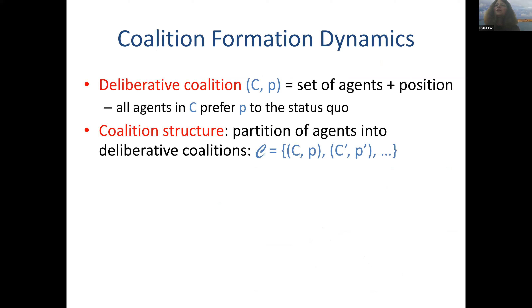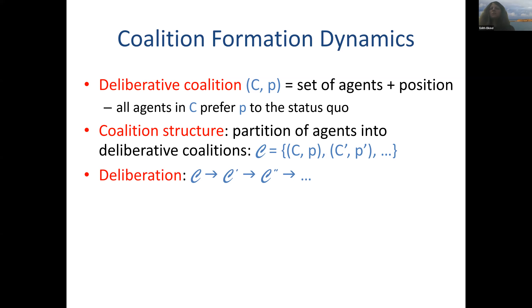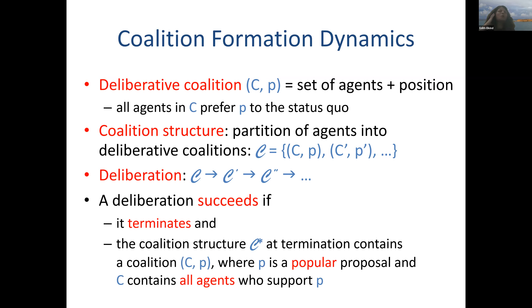A deliberative coalition has two components: a coalition and a proposal. We require that all agents in the coalition approve this proposal, meaning they prefer it to the status quo. The set of agents is split into deliberative coalitions — each agent sits in some coalition that approves some proposal. An agent can remain a singleton and stick to the proposal they most approve of. But agents can also form groups, which may adopt positions different from individual agents' positions. What happens during deliberation is we start with some coalition structure — naturally, each agent in a singleton coalition with their actual position — and this structure evolves.